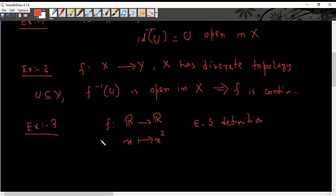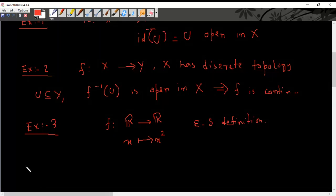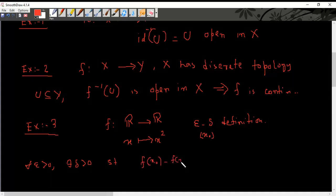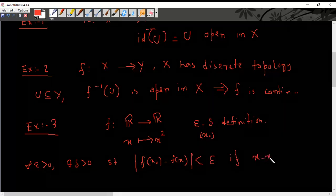In epsilon delta definition we have shown that for all epsilon greater than zero, there exists a delta greater than zero. Suppose we are interested about the continuity at the point x naught, such that f of x naught minus f of x will be less than epsilon if x minus x naught is less than delta.